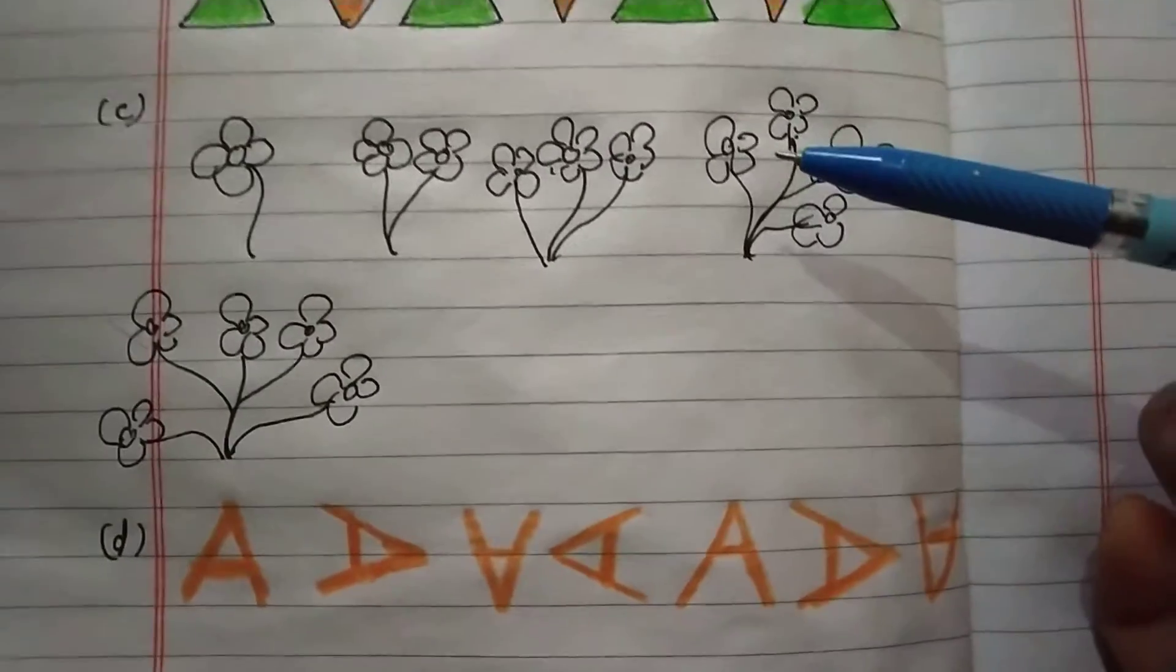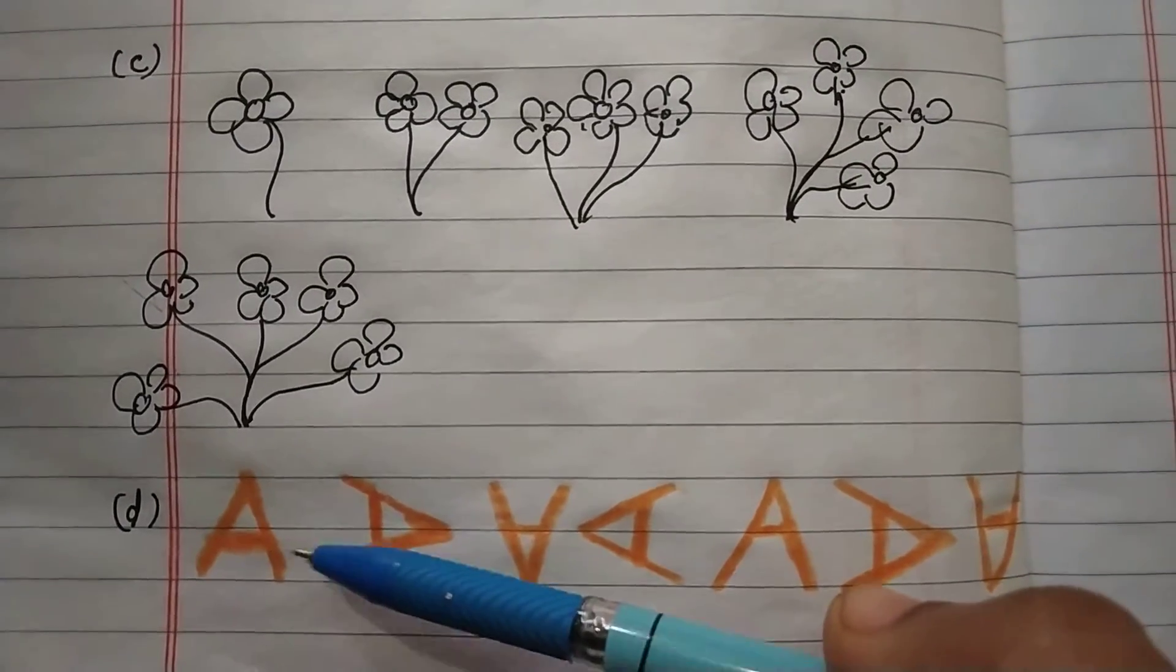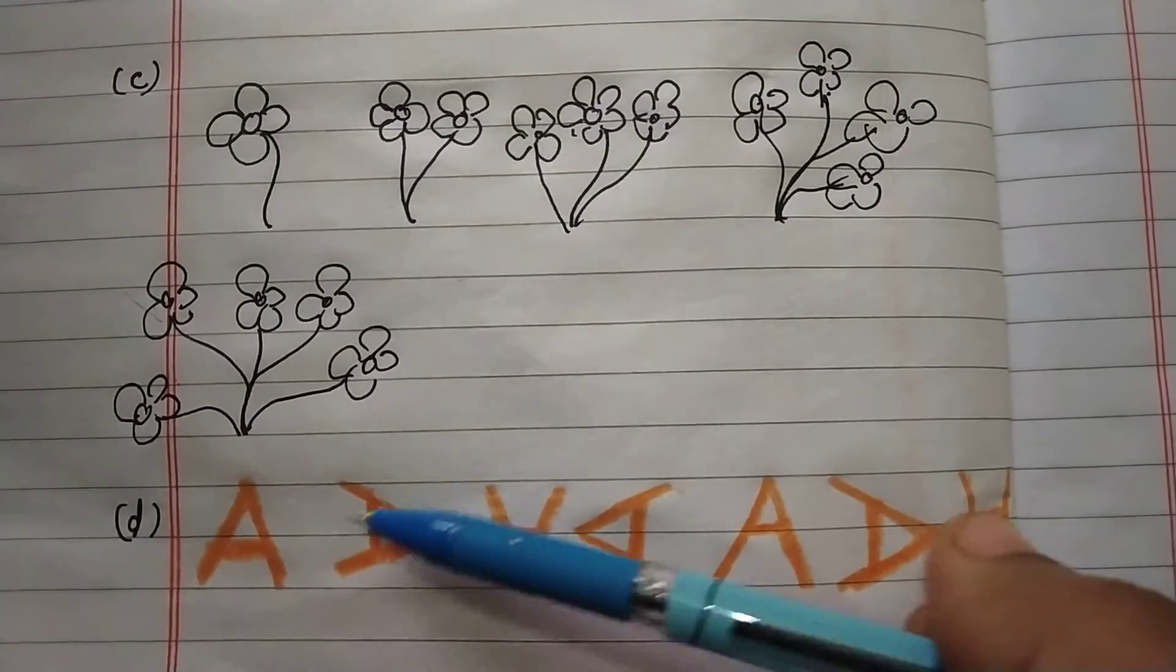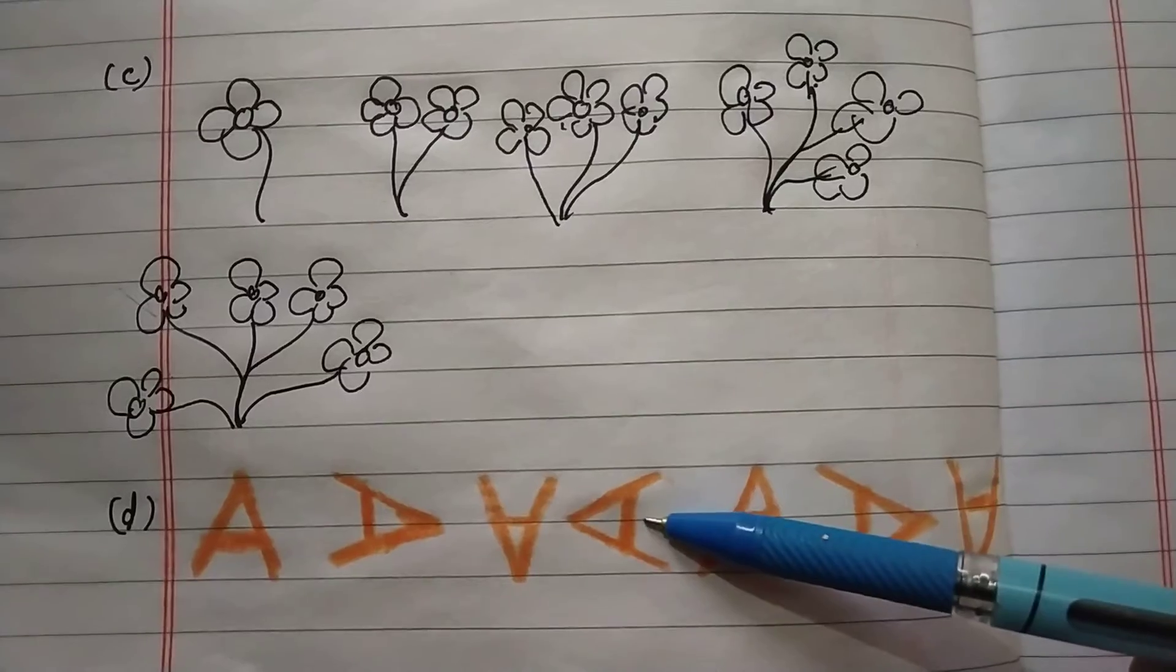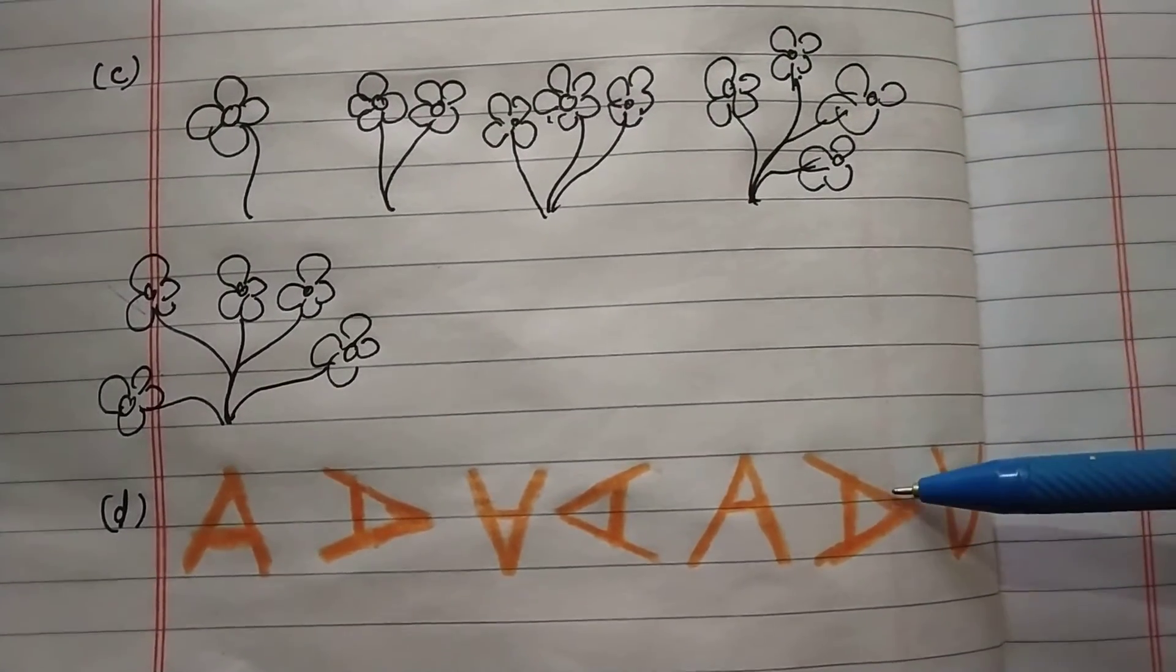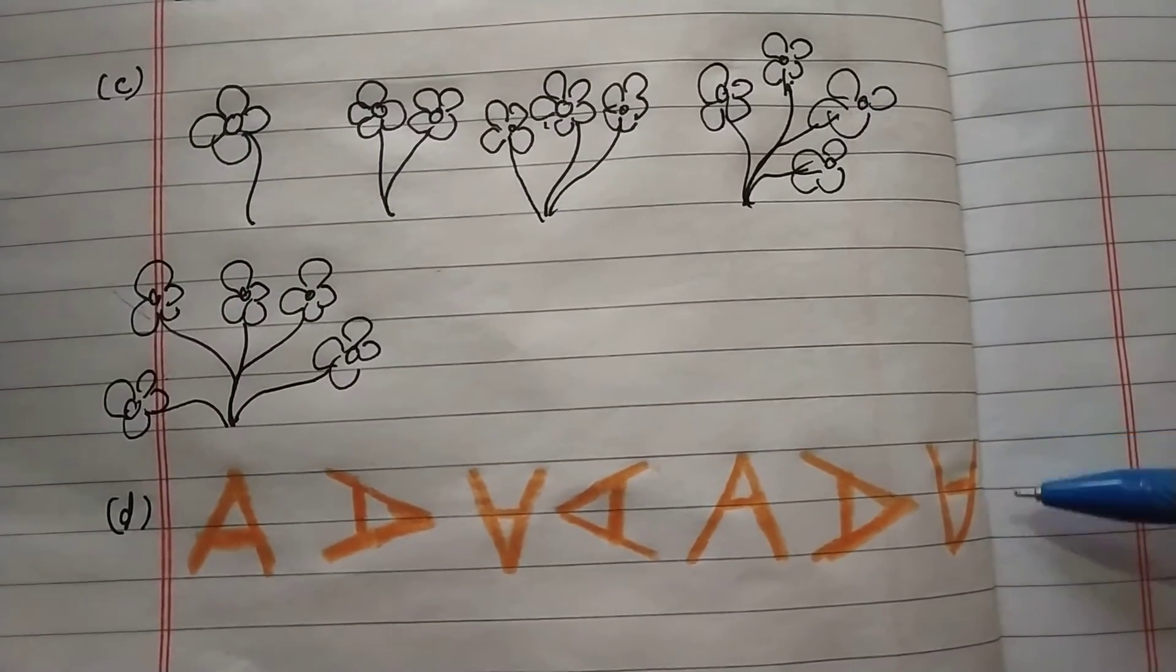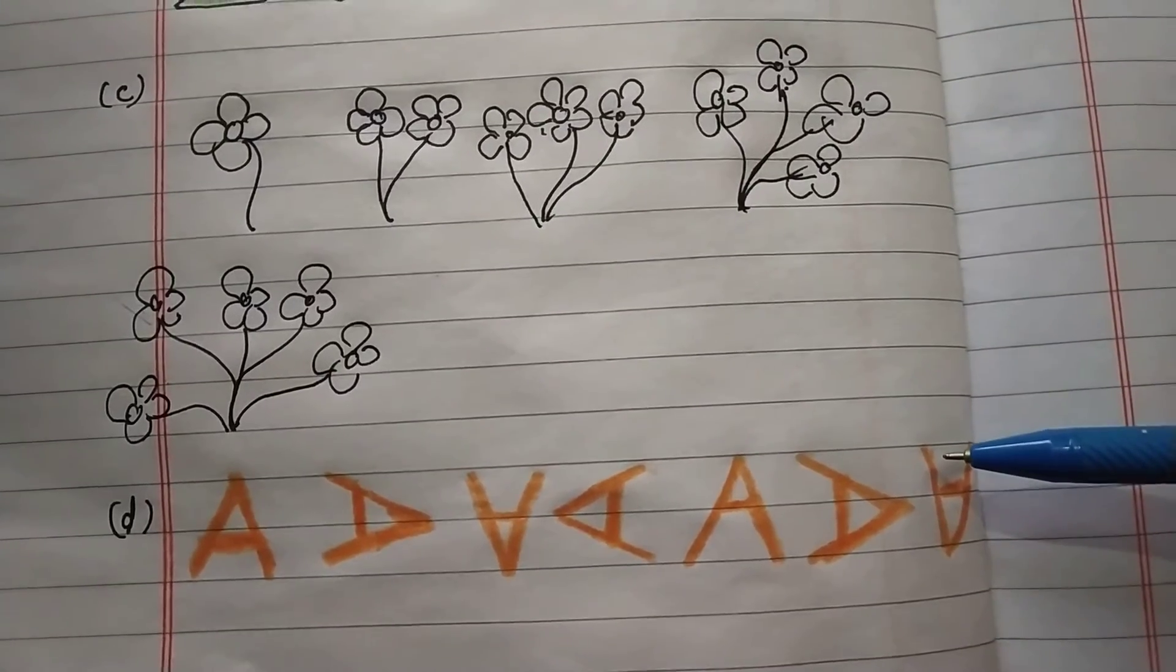And in D part, first A is straight, then it moves clockwise, in right, then downward, then left, then again straight, upward, then right, then downward, and in next position, it will be in the left side, okay.